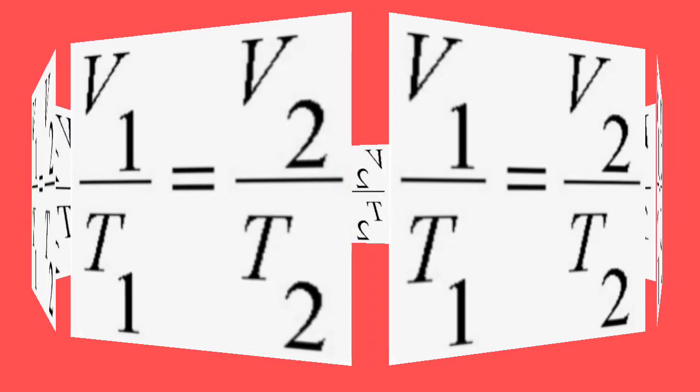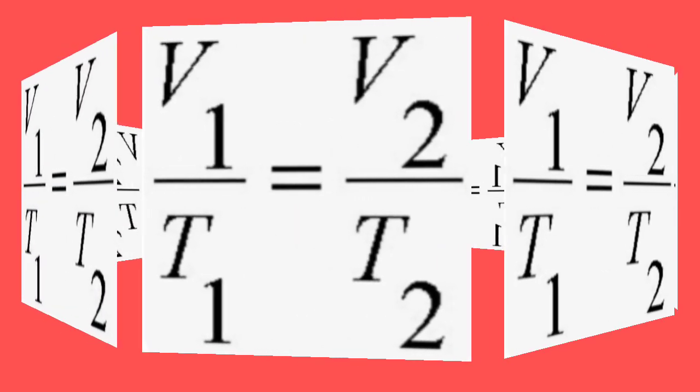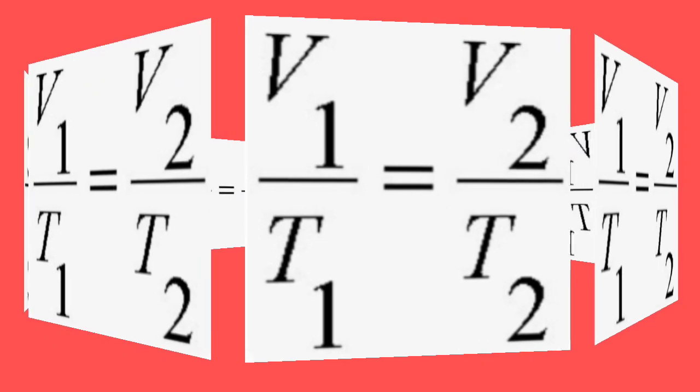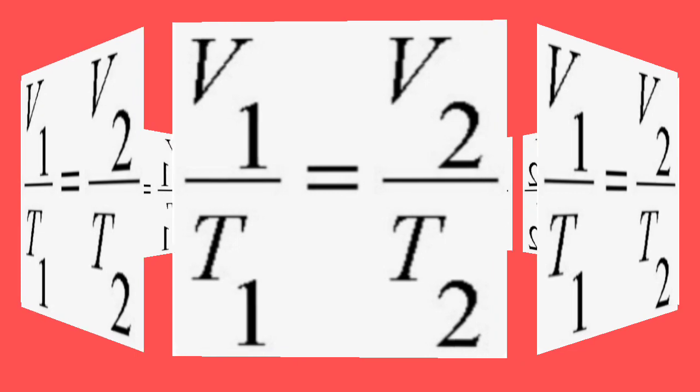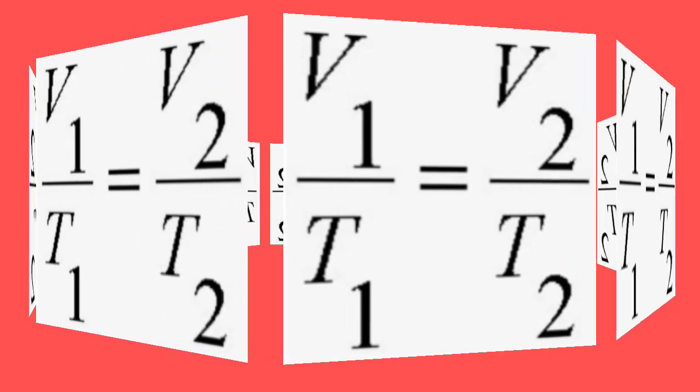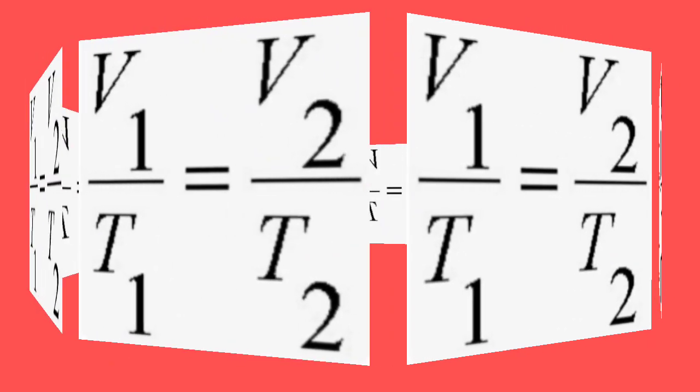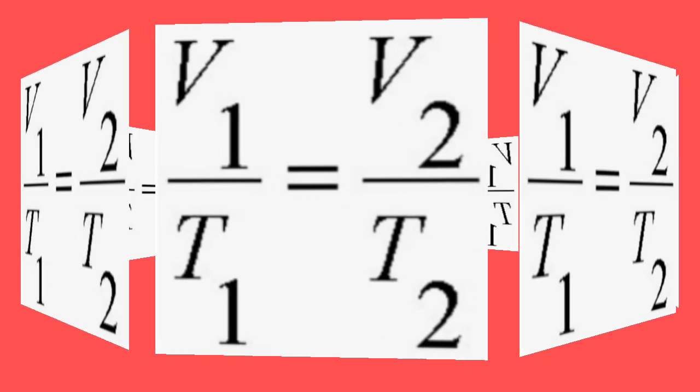अगर हम temperature कम करेंगे तो volume कम होगा और temperature बढ़ाएंगे तो volume बढ़ेगा. इसलिए V proportional जो T है, उसका मतलब यह है कि अगर हम temperature अगर बढ़ाते हैं तो volume बढ़ेगा और उससे इसका relation है.